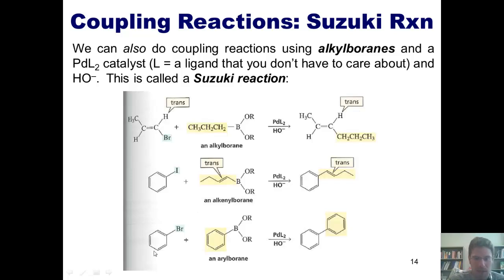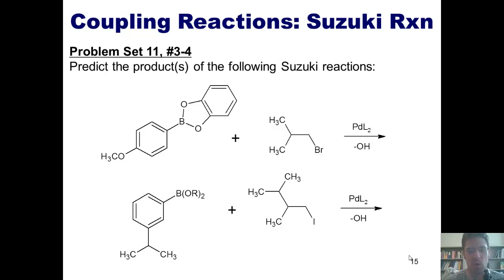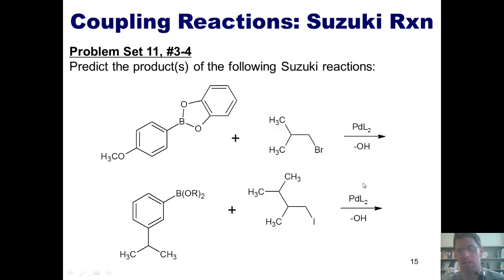Here's an additional example: I've got this phenyl bromide reacting with a phenyl borane, treated with palladium L2 and hydroxide. The benzene ring from the borane ends up completely taking the place of the halide in the starting material, giving the coupled product. This type of reaction is called a Suzuki reaction. Now we have some example questions from the problem set — predict the products of the following Suzuki reactions, with different alkyl boranes reacting with alkyl halides under palladium L2 and hydroxide conditions. You're welcome to pause now because I'm going to give you the answers momentarily.